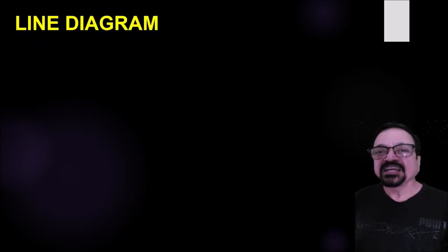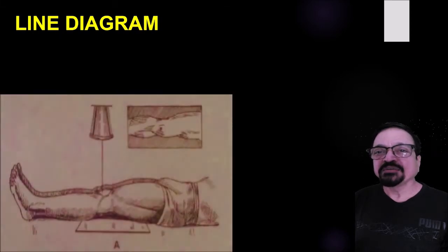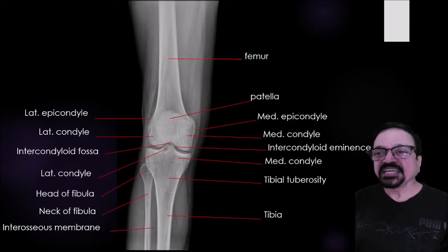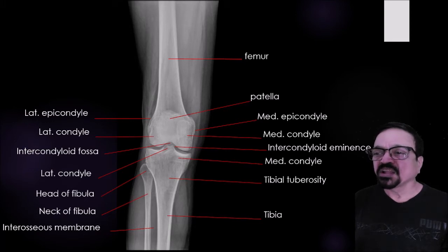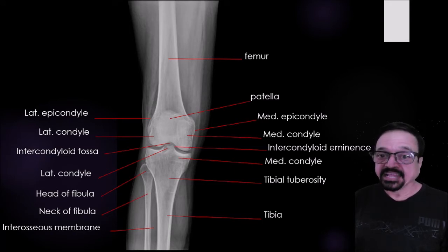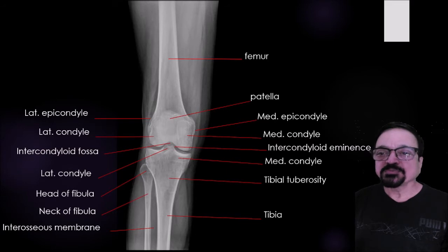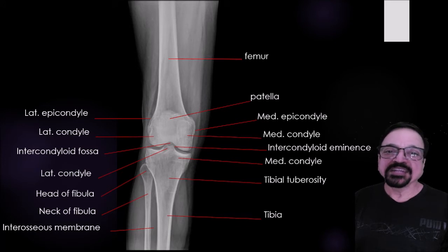Now we show where the cassette should be, where the center should be, and the correct patient position. The structures seen on the AP include: lower end of femur, patella, medial epicondyle, medial condyle, intercondylar eminence, tibial tuberosity, tibia, interosseous membrane, neck of fibula, head of fibula, lateral condyle, intercondylar fossa, and lateral epicondyle of the femur. The joint space and intercondylar eminence should be well seen; if not, apply five degrees cephalad angulation.